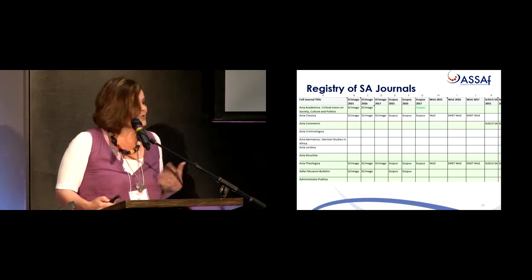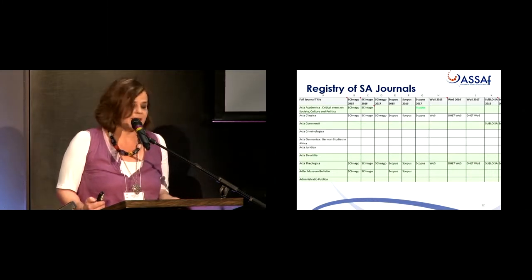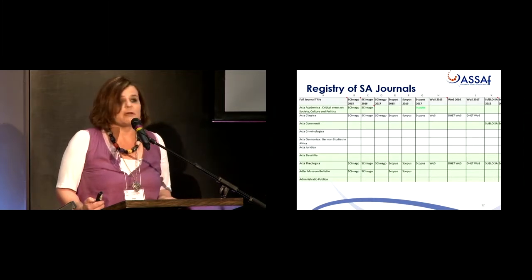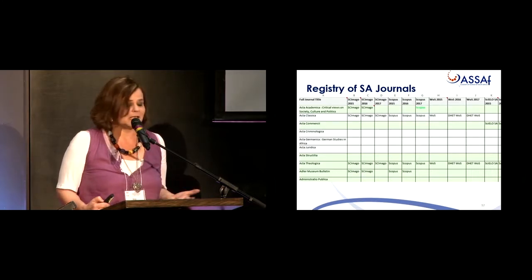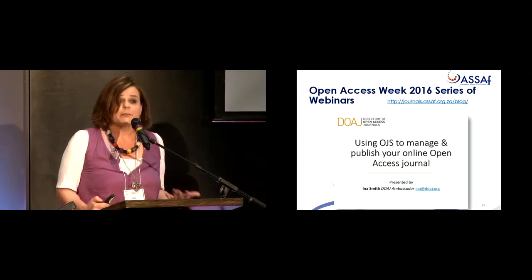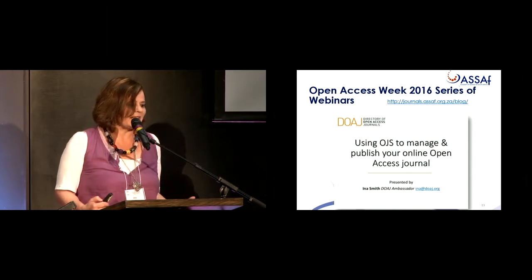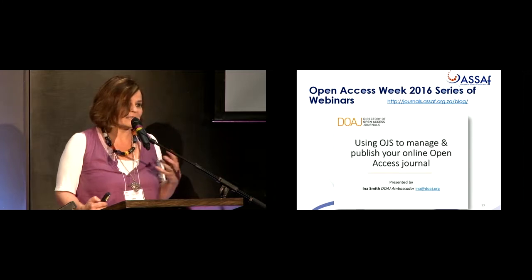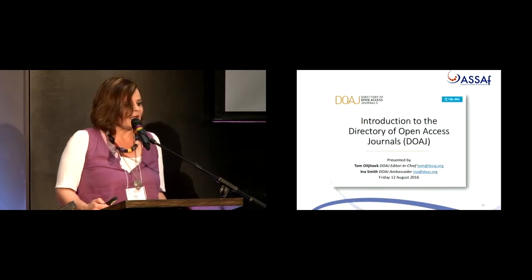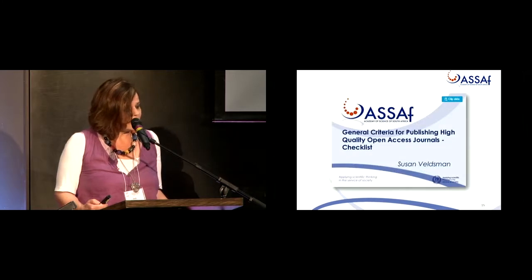For our registry of 396 journals, we keep an Excel spreadsheet and monitor changes over the years — in terms of indexing, whether they are added to or dropped from an index. We want to monitor trends and hopefully this will produce valuable data. We would like to see this for all of Africa. During Open Access Week last year in October, we presented a series of webinars. We started with using OJS to manage and publish your online open access journal, which was well attended by Africans and even people from Eastern Bloc countries. The second was an introduction to the Directory of Open Access Journals, presented in my capacity as DOAJ ambassador.